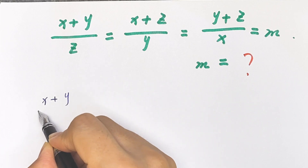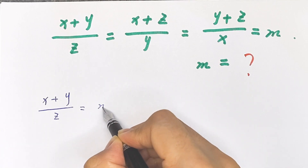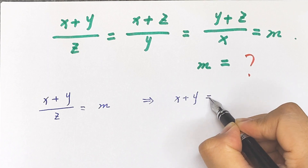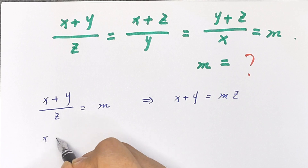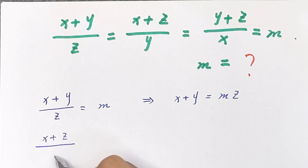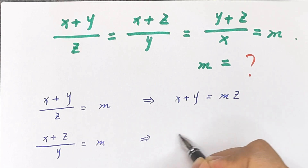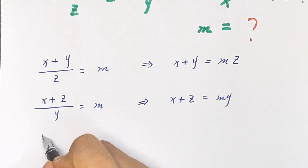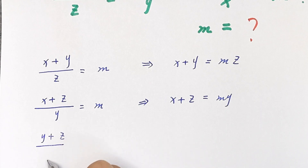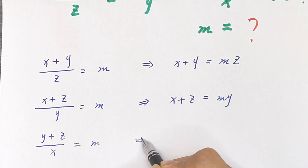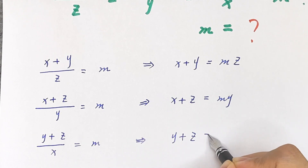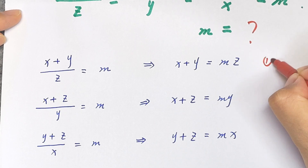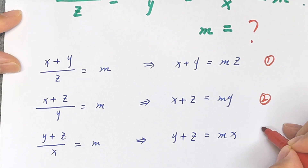x plus y divided by z equals m, which means x plus y equals m times z. x plus z divided by y equals m, which means x plus z equals m times y. y plus z divided by x equals m, which means y plus z equals m times x.